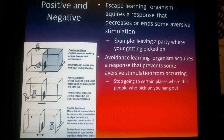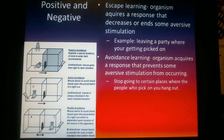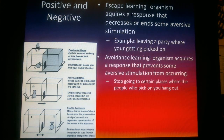The last parts of operant learning deal with escape learning and avoidance learning. Escape learning is where an organism acquires a response that decreases or ends an aversive stimulus — for example, leaving a party when you're being picked on. Avoidance learning is learning to stop going to certain places altogether where people who pick on you would normally hang out. The difference is that in escape learning the organism is present with the stimulus and then decides to get away from it.